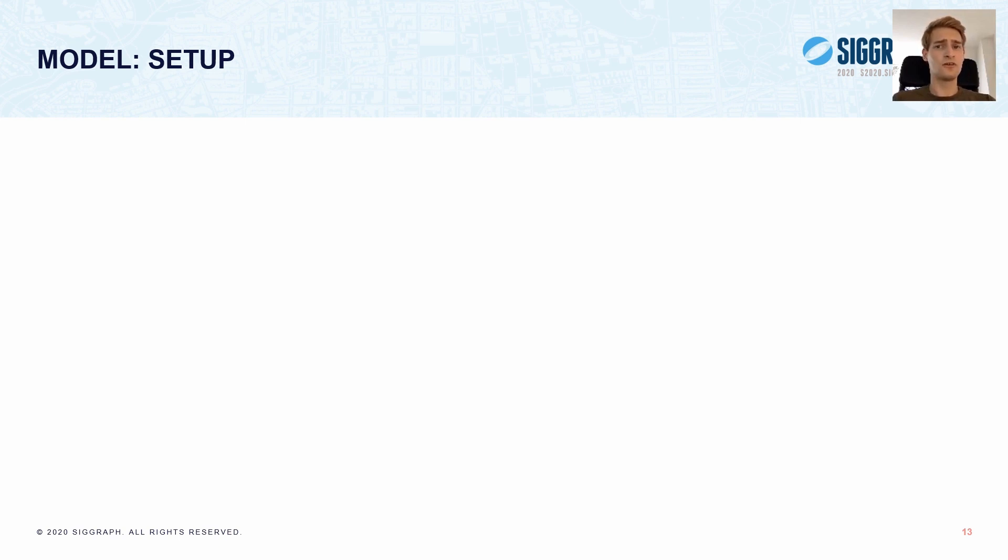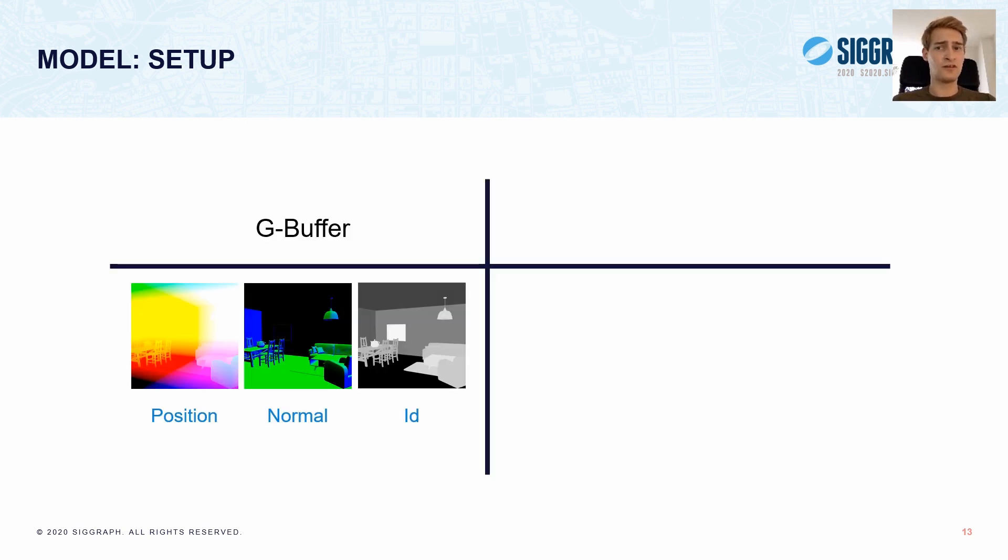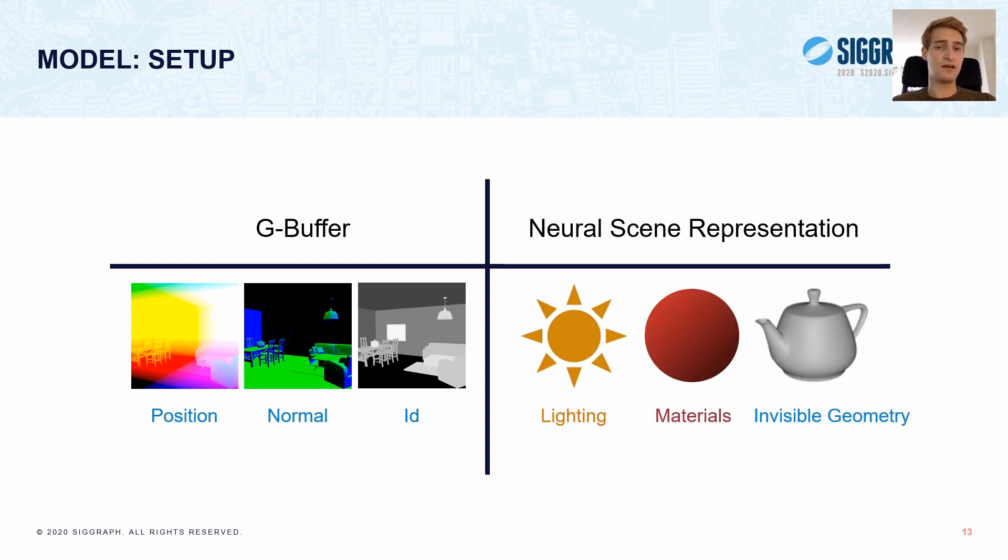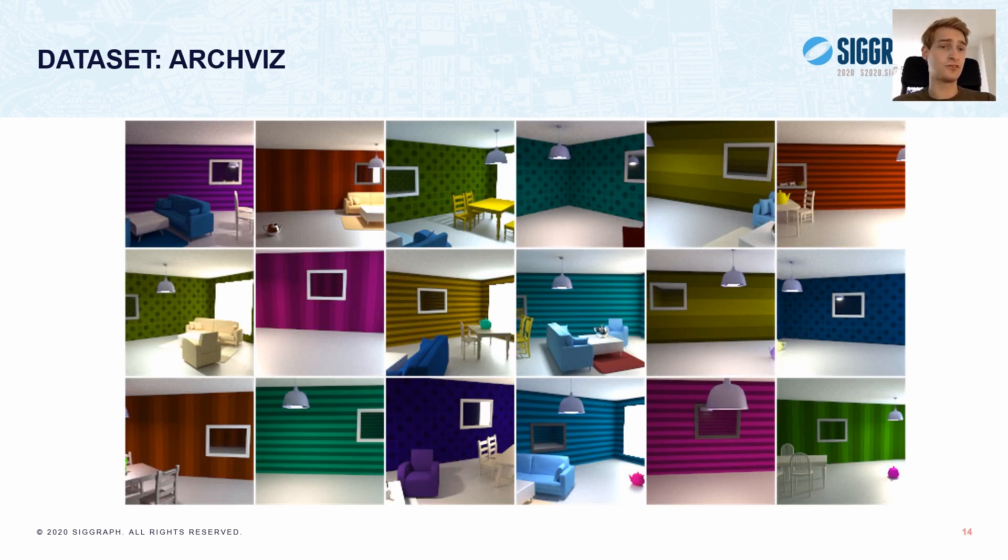So, in order to analyze the flow of scene information easily, it is desirable to minimize the overlap between the gbuffer and the neural representation. Hence we make the design decision to put only geometric information into the gbuffer, specifically world space position, normal, and object IDs. Then lighting information and surface materials are captured only by the representation, which complements the gbuffer. But it may also contain some geometry of objects that are outside the camera view. And with this split, we can quite easily identify artifacts caused by the networks. This is what we used in most of our experiments.